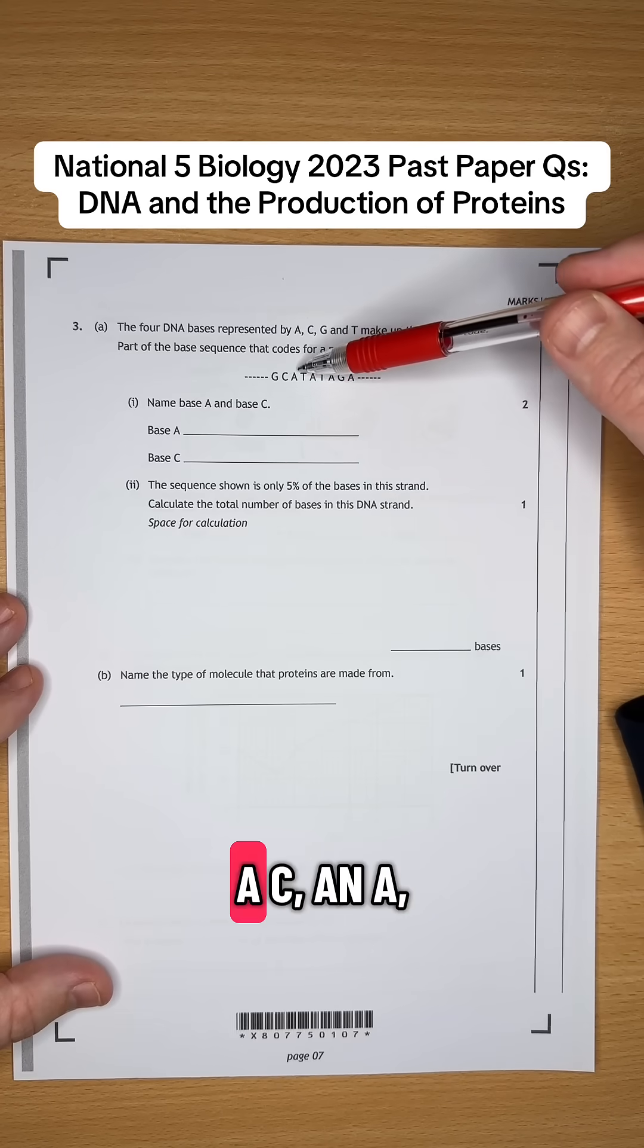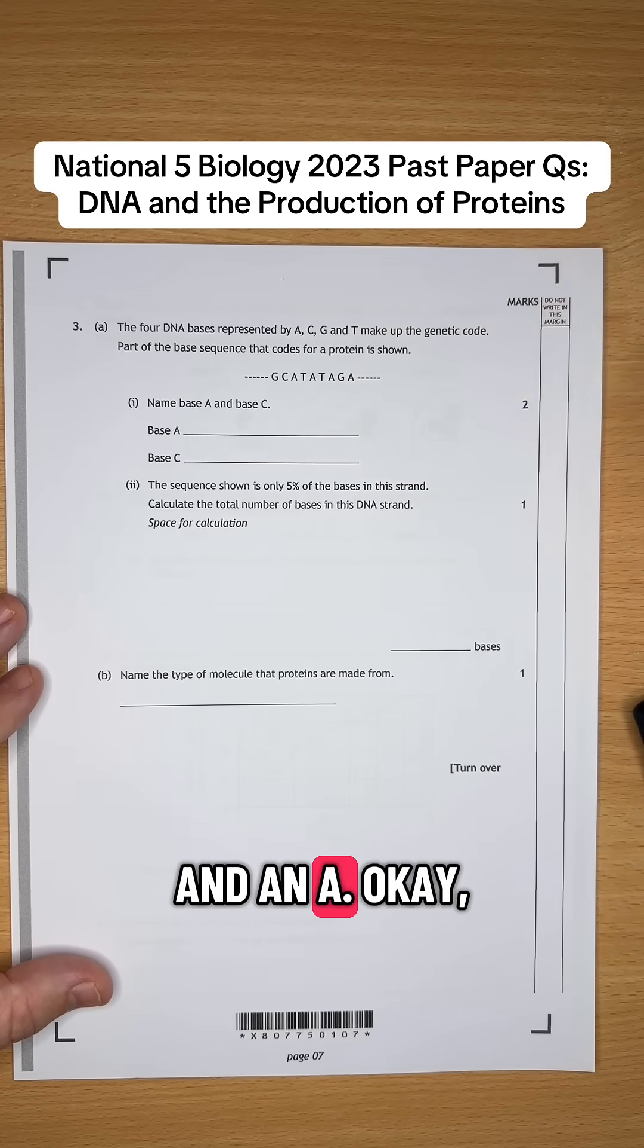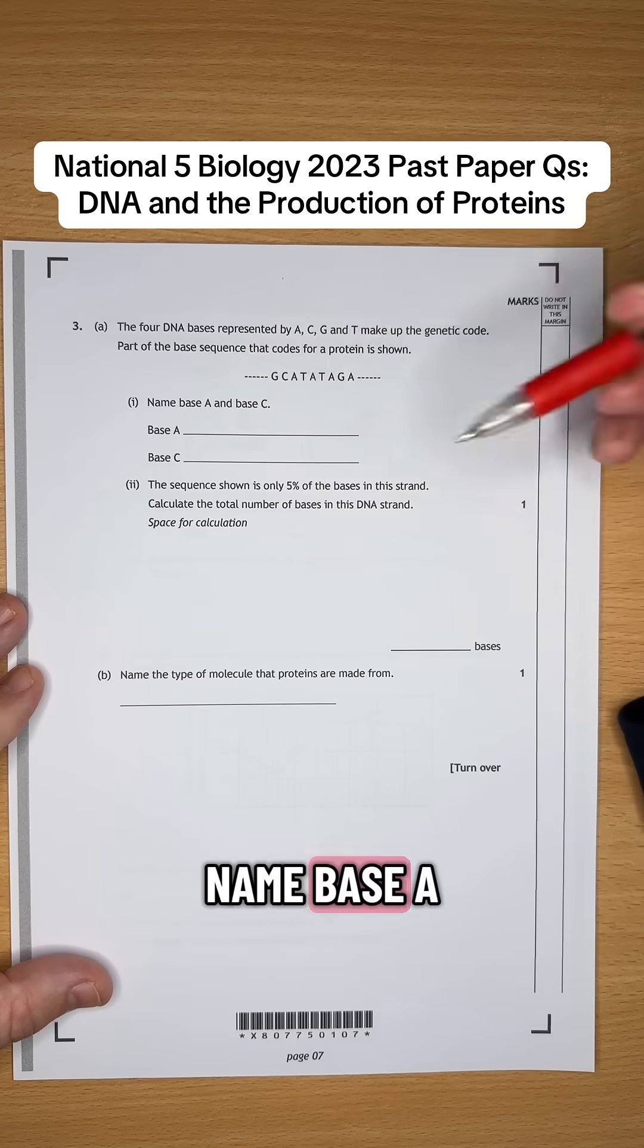Okay, so we've got G, C, A, T, A, T, A, G, and A. We have to name base A and C.